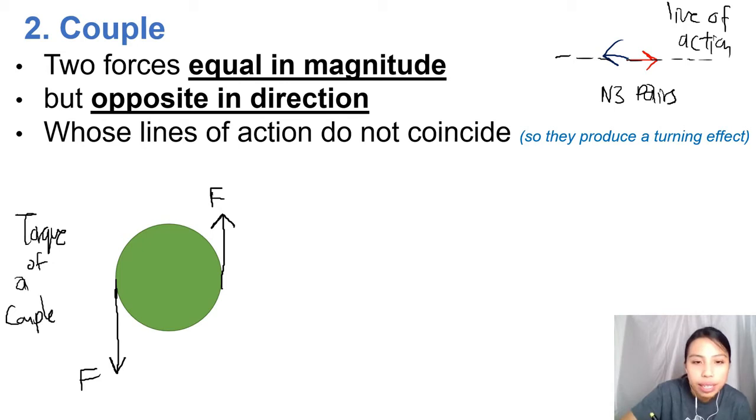So couple basically means this fellow and this fellow is a couple. Why? Because equal magnitude, check, opposite direction, one goes up, one goes down. And most importantly, their lines of action don't coincide. Because the one that's going up, the line of action is just like that, all along that line. And the one going down has a line of action here, and they don't coincide. But they will make this round object rotate.